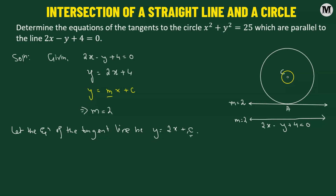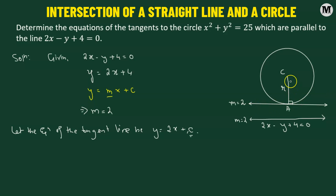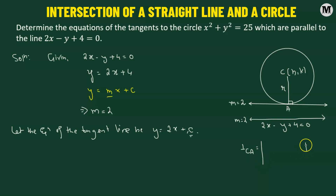What we'll do is drop a perpendicular from point c, which is the center of the circle, to point A, or the point of tangency. We know that CA is always perpendicular to the tangent line. CA is the radius of the circle, and also the perpendicular distance from the center to the straight line. Let's say the center has coordinates h, k. There's a formula for the perpendicular distance CA.